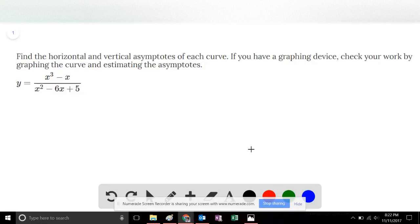This is problem number 51 of the Stewart Calculus 8th edition, section 2.6. Find the horizontal and vertical asymptotes of each curve. If you have a graphing device, check your work by graphing the curve and estimating the asymptotes. The function is y equals x cubed minus x divided by the quantity x squared minus 6x plus 5.